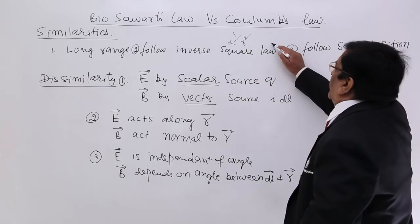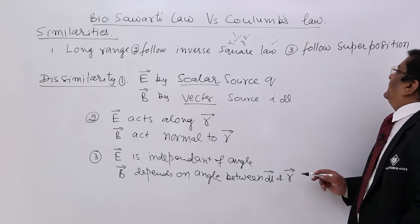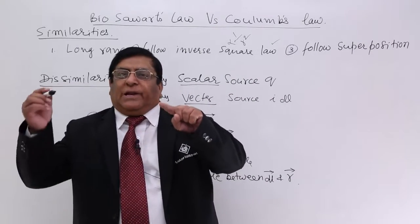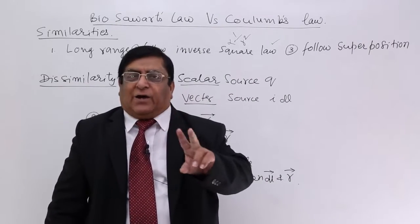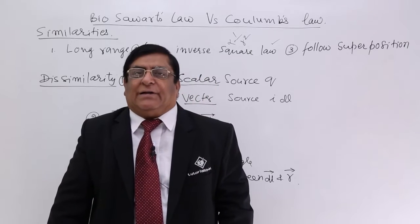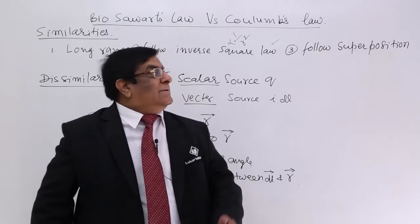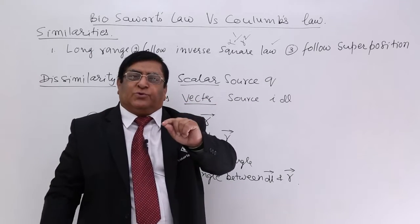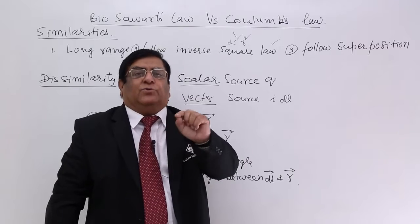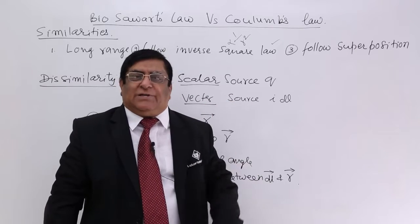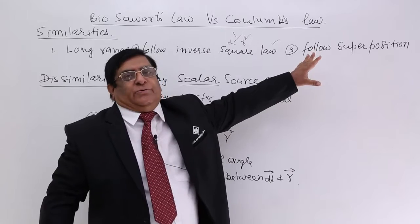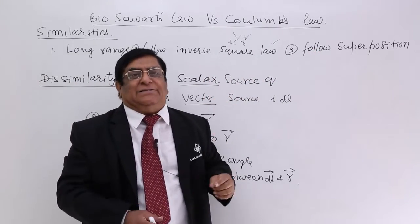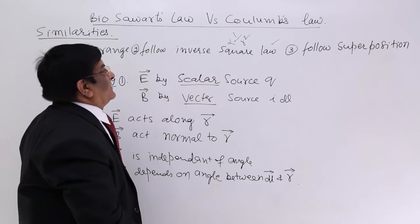And the third similarity is they follow superposition laws. At one point, two electric fields are allowed to be added—algebraic addition or vector addition. In magnetic field, at one point there are two magnetic fields due to two sources. It is allowed to make their vector additions because they are vectors. So both follow superposition laws. These are the three basic similarities between Coulomb and Bio-Savart's law.